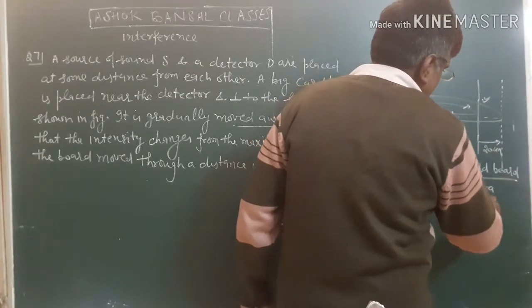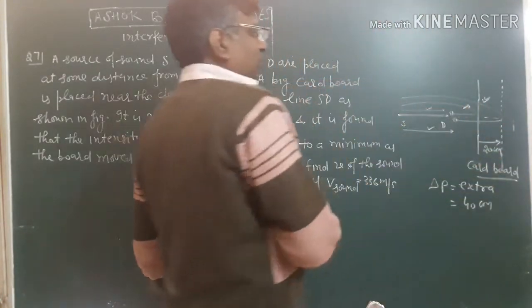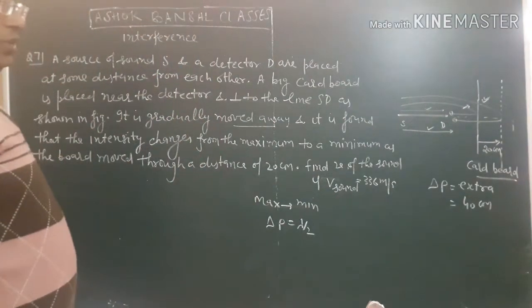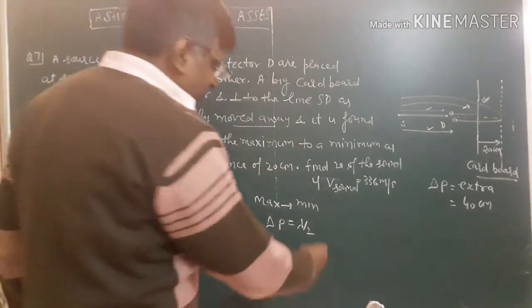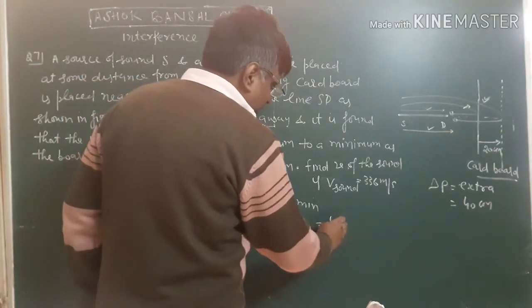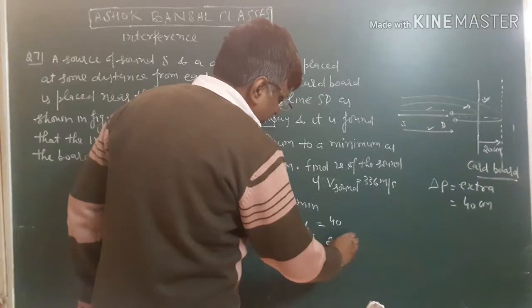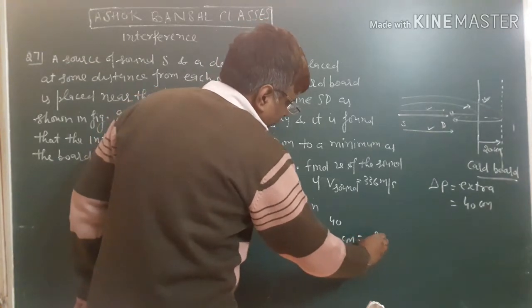40 cm? Double? Lambda by 2 equals 80 cm, or 0.8 m.